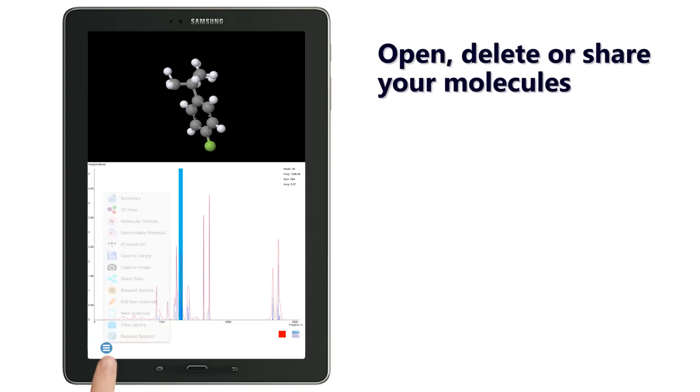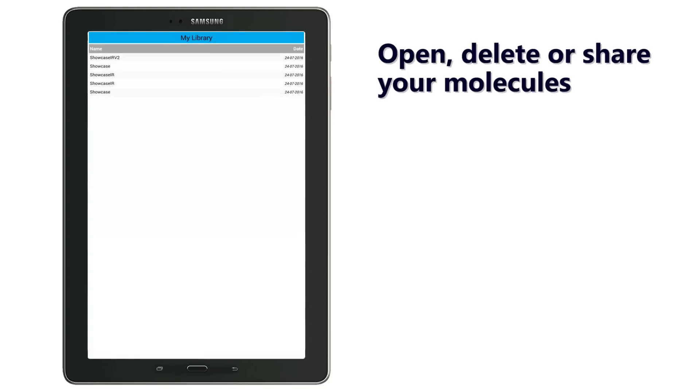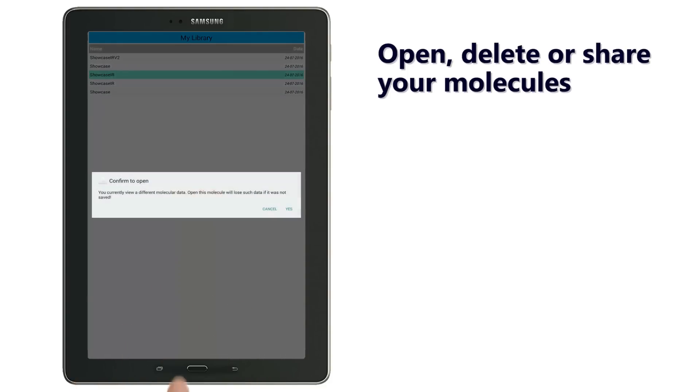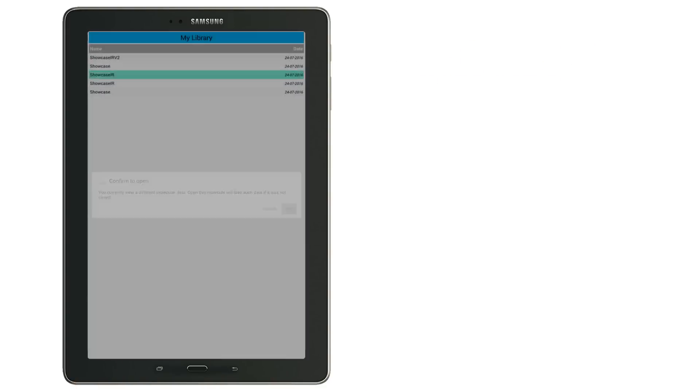Now if you navigate to the view library menu option, you'll see that you have items that were saved. Selecting one will allow you to open, delete, or even share the data with a friend. Let's open the previous one.